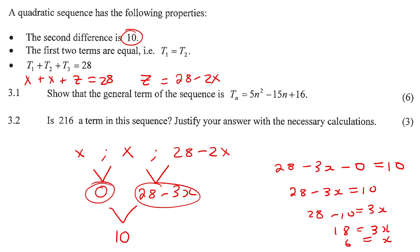Now that we have x, we can construct this. We can say that x is 6, so term 1 is 6, term 2 is 6, and then this would be 28 minus 2 times 6, which is 28 minus 12, which is 16. And there we have the first three terms of our sequence.